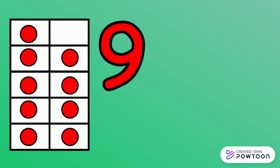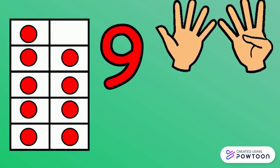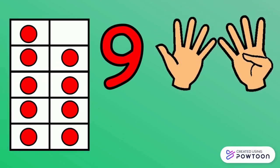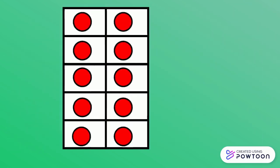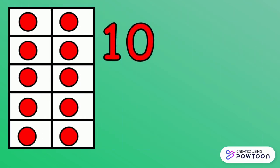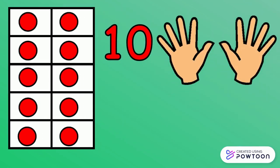9. We open five fingers and four fingers on the second hand. 9 equals 5 plus 4. 10. We open five fingers and five fingers on the second hand. 10 equals 5 plus 5.